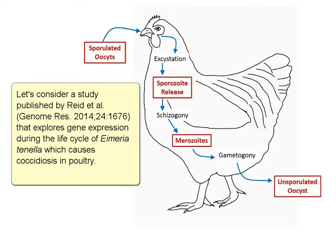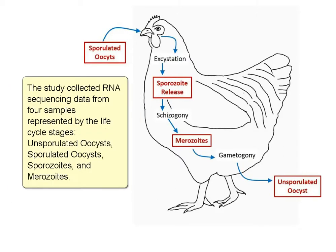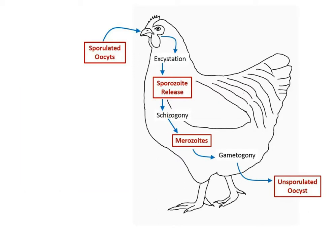Let's consider a study published by Reid et al. in Genome Research that explores gene expression during the life cycle of Eimeria tenella, which causes coccidiosis in poultry. The study collected RNA sequencing data from four samples represented by the life cycle stages: unsporulated oocysts, sporulated oocysts, sporozoites, and merozoites.